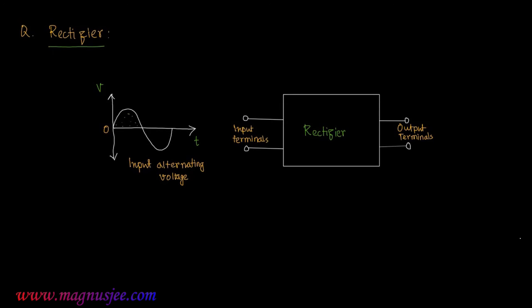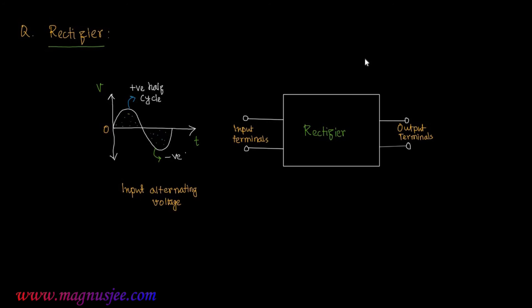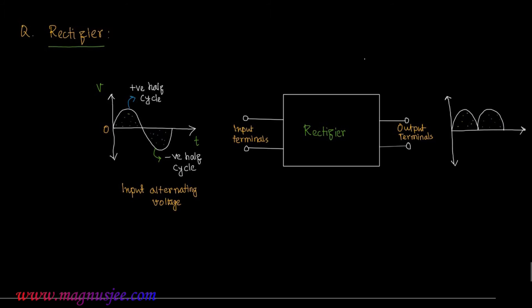The input alternating voltage has a positive half cycle and a negative half cycle. When this input is applied at the input terminals of the rectifier, at the output we get only positive half cycles — the negative half cycle is converted into a positive half cycle.